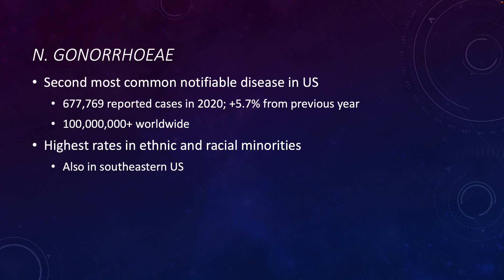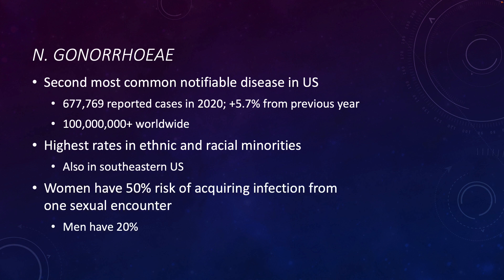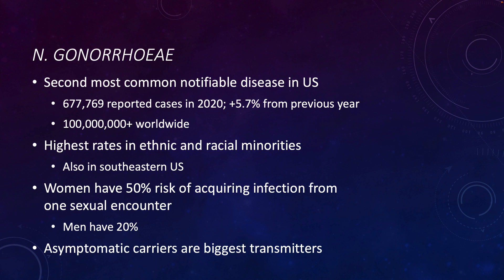The highest rates of infection in the U.S. are in ethnic and racial minorities and in the southeastern portion of the country. Women have a 50% risk of acquiring infection from a sexual encounter with an infected partner, while men have about a 20% risk. Asymptomatic carriers are the biggest transmitters.